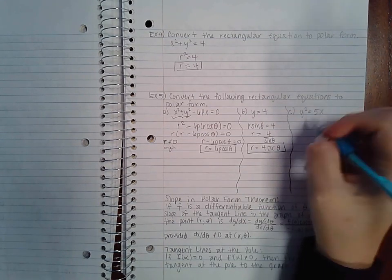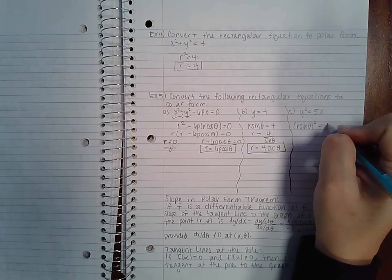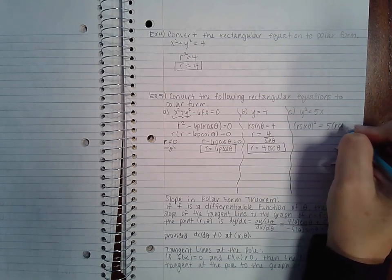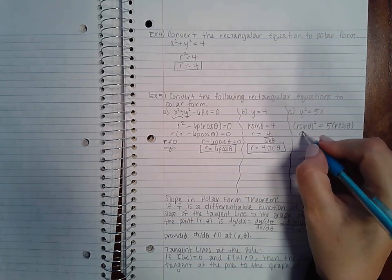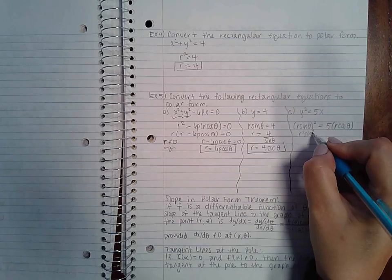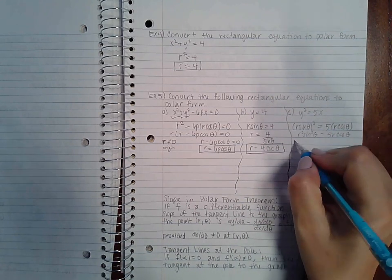And then finally here, y squared is r sine theta squared, x is r cosine theta. So we have r squared sine squared theta equal to five r cosine theta. If we set everything equal to zero and take a factor out an r...